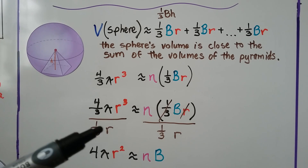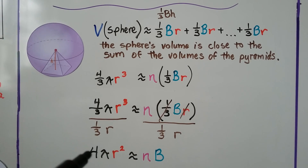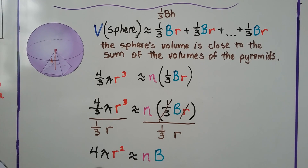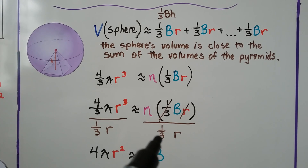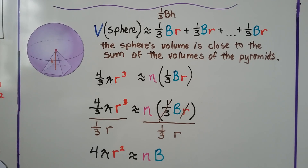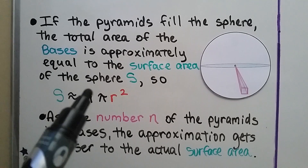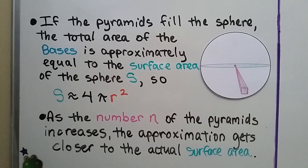We can divide both sides by 1 third r. There are four 1-thirds in 4 thirds, so we have a 4 here. Using the quotient rule, radius cubed divided by radius gives us radius squared, so we have 4 pi r squared on one side. On the other side, the 1 third cancels and the r cancels, leaving us with the number of pyramids times their bases. If the pyramids fill the sphere, the total area of the bases is approximately equal to the surface area S.